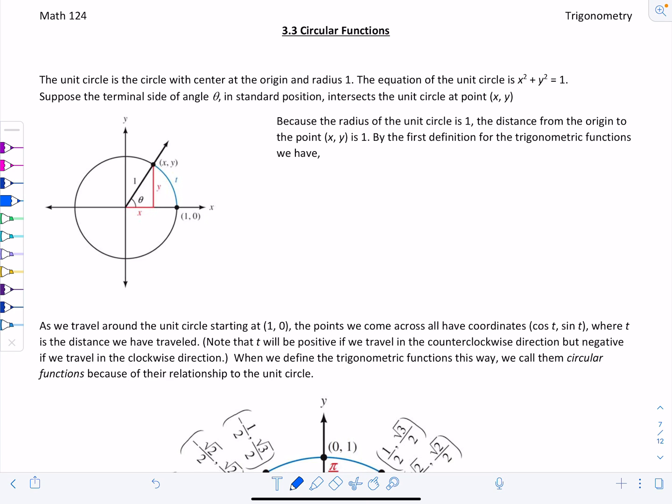This is a trigonometry video lecture for section 3.3 on circular functions. So now is our big introduction to the unit circle. The unit circle is the circle that's centered at the origin and it has radius 1. The equation of the unit circle is x squared plus y squared equals 1. That should make sense, we studied circles at the very beginning of the course.